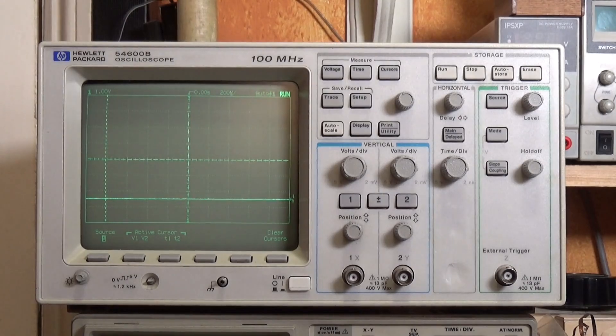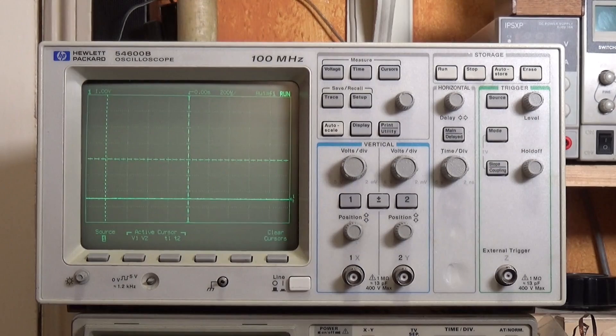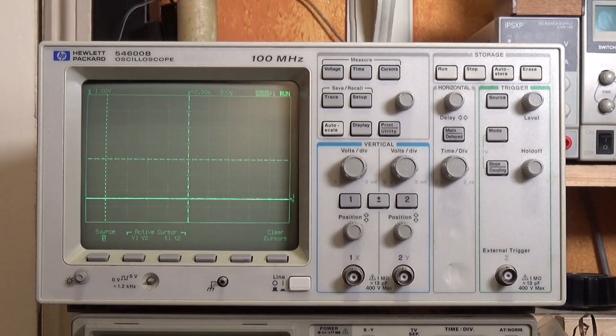Which brings us on to this lovely thing—this is a Hewlett Packard 54600B, 100 MHz digital oscilloscope. These were made in the early 1990s, this is probably about 30 years old.